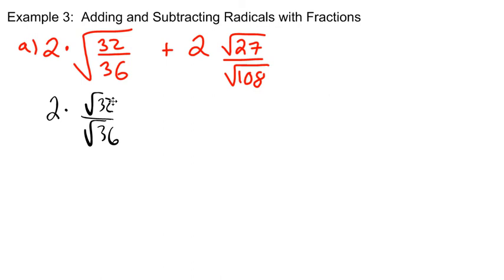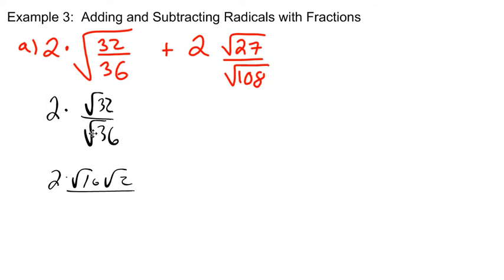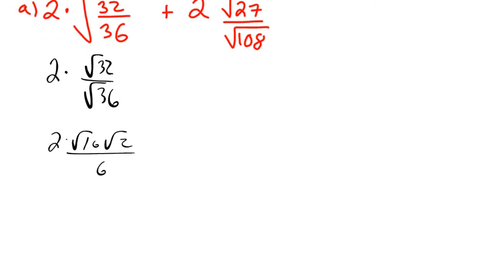This becomes something we learned at the beginning of this chapter: simplify radical 32 and simplify radical 36. Square root of 32 — what perfect square goes into 32? That's going to be 16. So I can rewrite this as 2 times radical 16 times radical 2. And 36 is a perfect square, so that's just going to become 6. So it's 2 times radical 16 times radical 2, all over 6.